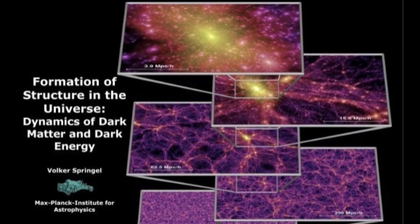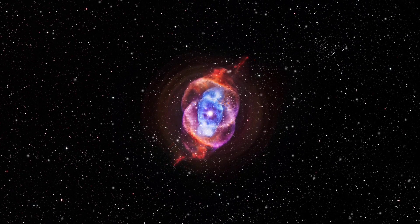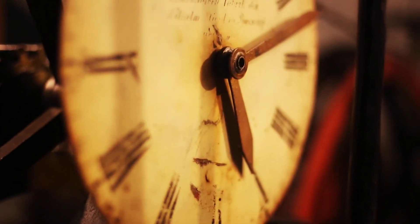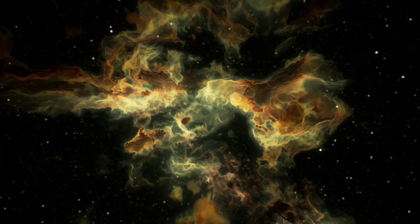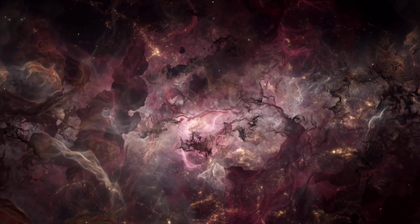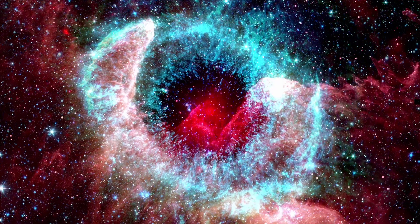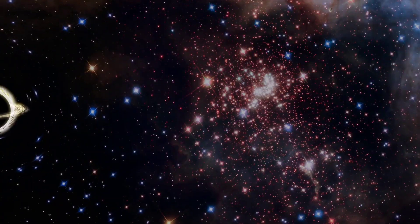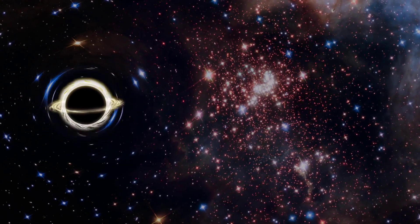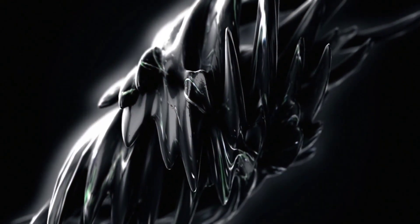Structure Formation: Gravity began to pull matter together, forming the first stars and galaxies. Over billions of years, these initial structures merged and grew into the vast cosmic web we observe today, with galaxies, clusters of galaxies, and superclusters. Dark matter, a mysterious form of matter that does not emit light, played a crucial role in this process by acting as a scaffold for the formation of cosmic structures.